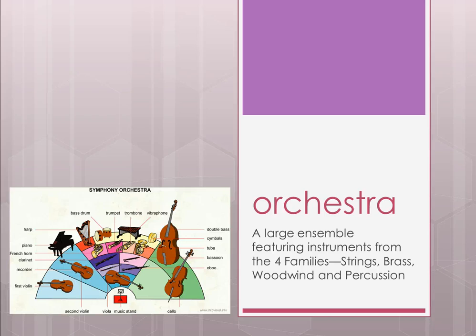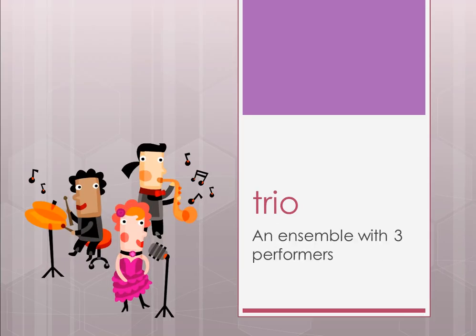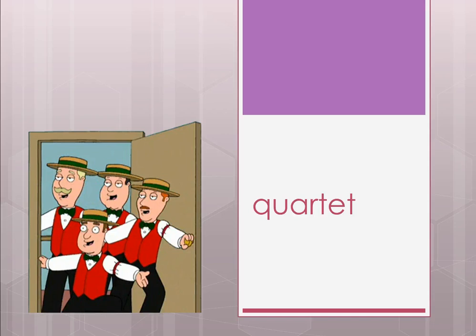A trio is an ensemble with three performers — for example, a singer, a drummer, and a saxophonist — but it can be any group of three instruments, including a vocal trio. A quartet, if you like Family Guy, think of a barbershop quartet: it's an ensemble with four performers, such as a string quartet, wind quartet, or brass quartet — any four performers.